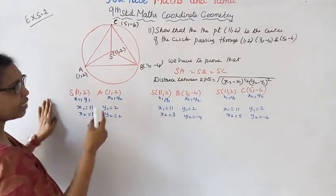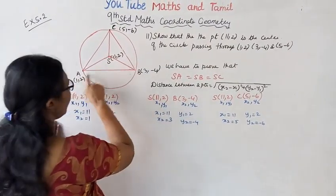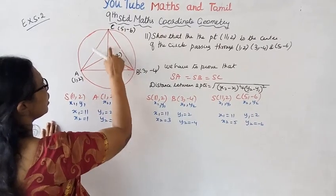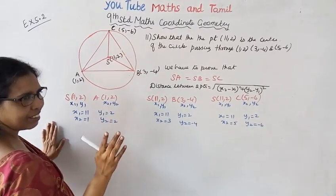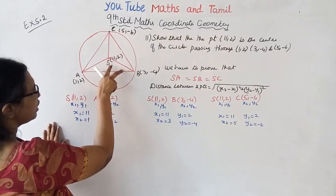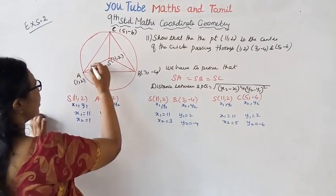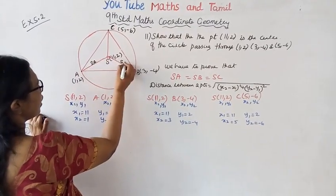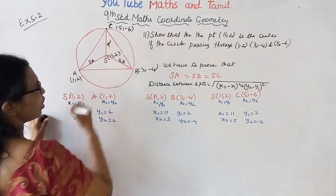It is easy — here is how to do it. We need to show that SA equals SB equals SC. We find the distance between SA, SB, and SC.